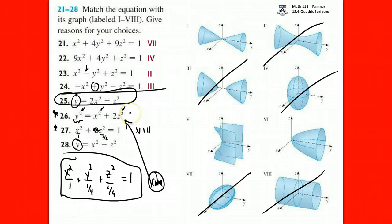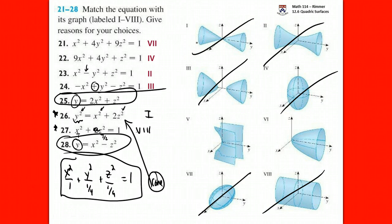Between questions 25 and 28, we're choosing between Roman numerals V and VI — one is a bowl (paraboloid) and one is a saddle (hyperbolic paraboloid). Question 25 is the paraboloid and question 28 is the hyperbolic paraboloid, based on the sign — a minus gives the saddle. So Roman numeral V is question 28 and Roman numeral VI is question 25.